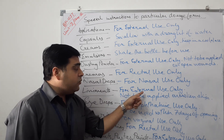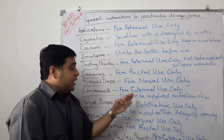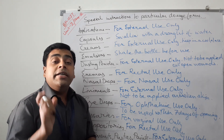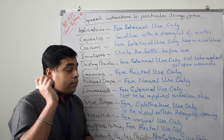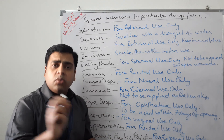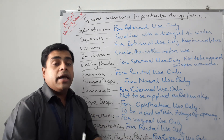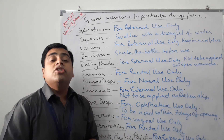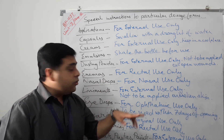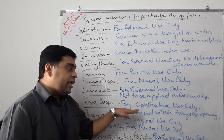For enemas: 'for rectal use only.' For nasal drops: 'for nasal use only.' For liniments — a very important preparation — 'for external use only' or 'not to be applied on broken skin,' because the contents of liniments cause irritation on the skin. If there is broken skin, a cut, or an open wound, applying liniment will cause serious discomfort to the patient. So these label instructions are mandatory.